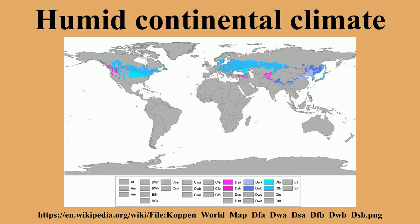Moisture within this climate regime in North America is supplied by the Gulf of Mexico and adjacent western subtropical Atlantic. Precipitation is relatively well distributed year-round in many areas with this climate, while others may see a marked reduction in wintry precipitation, which increases the chances of a wintertime drought. Snowfall occurs in all areas with a humid continental climate and in many such places is more common than rain during the height of winter. In places with sufficient wintertime precipitation, the snow cover is often deep.